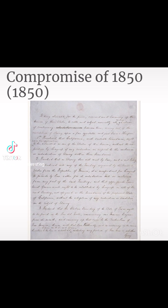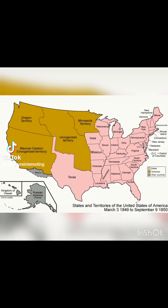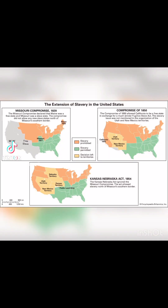By 1850, sectional disagreements related to slavery were straining the bonds of the Union between the North and the South. These tensions became especially critical when Congress began to consider whether western lands acquired after the Mexican-American War would permit slavery. In 1849, California requested permission to enter the Union as a free state, meaning one where slavery was banned. Adding more free state senators to Congress would destroy the balance between slave and free states that had existed since the Missouri Compromise of 1820.